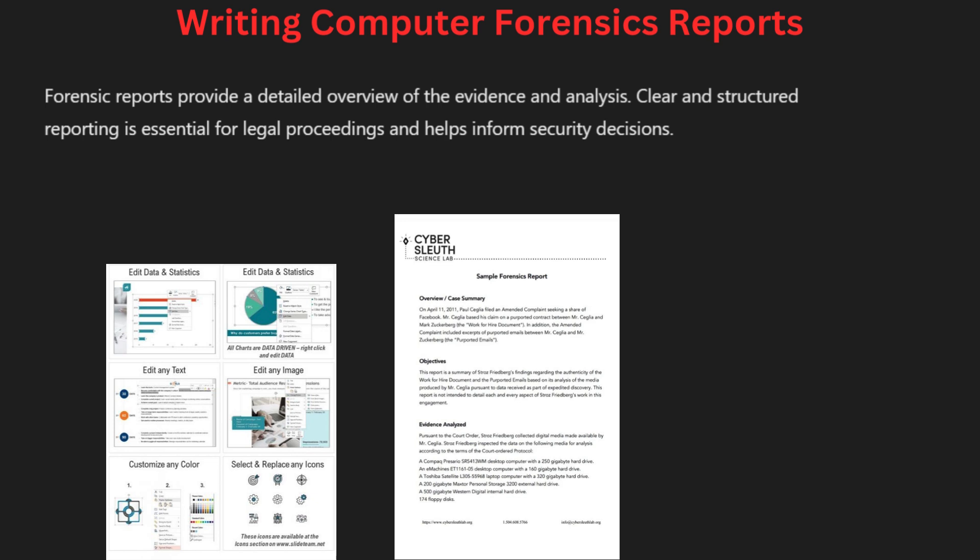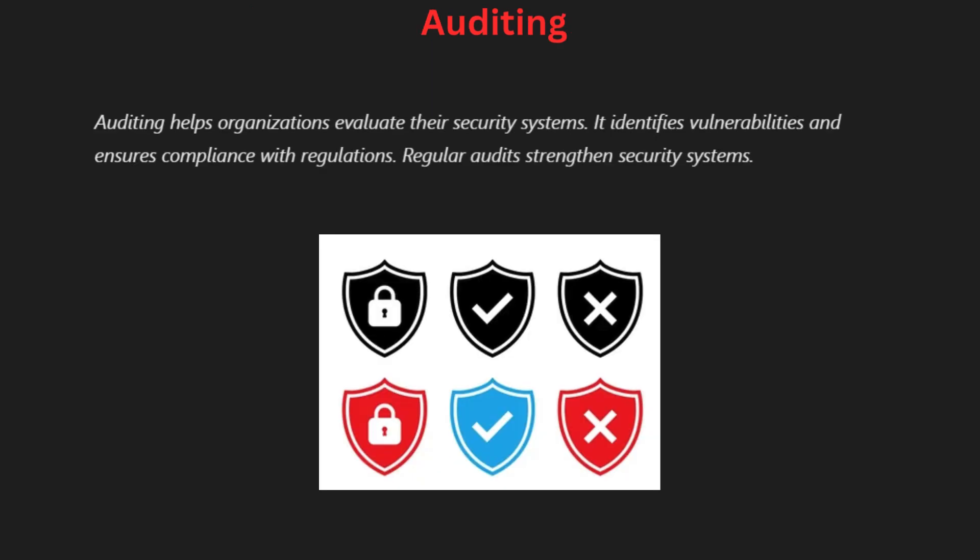Auditing is an essential process in cyber security that involves evaluating an organization's security measures. The goal is to identify vulnerabilities and assess the effectiveness of existing controls. Audits can be conducted internally by employees or externally by third-party experts. The auditing process typically begins with a thorough review of policies, procedures and systems in place, which helps auditors understand how security measures are implemented.